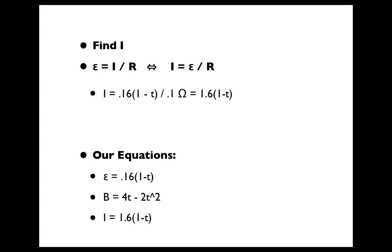So our equations are: voltage equals 0.16 times 1 minus t, the B field equals 4t minus 2t squared, and current equals 1.6 times 1 minus t.